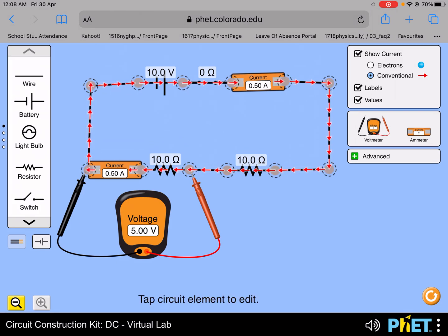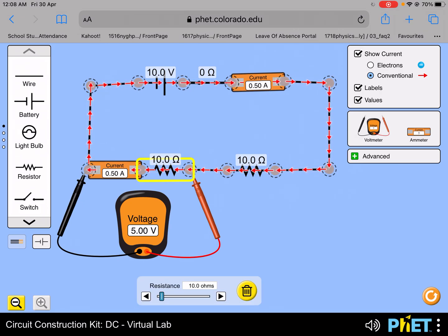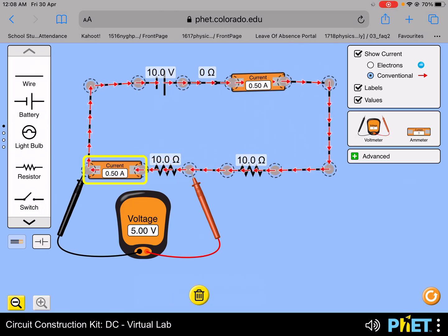Now I'm going to increase the resistance of the rheostat. Observe carefully the current passing through the circuit. It's now 0.5 ampere.